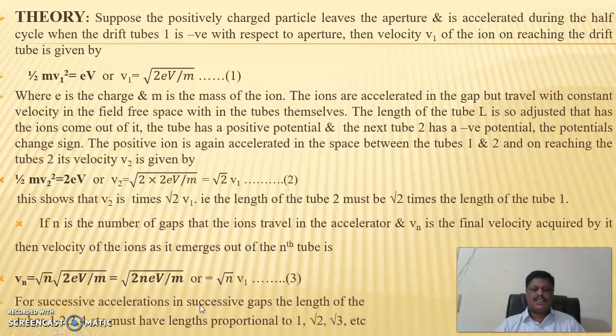For successive accelerations in successive gaps, the length of the tubes 1, 2, 3, 4, etc. must have lengths proportional to 1, √2, √3, etc.